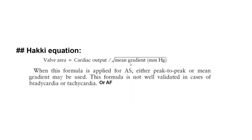When you see the gradient and cardiac output — for example an aortic valve peak-to-peak gradient and cardiac output — you can calculate in your head whether the valve area is less than one or greater than one. Please plant it in your brain: cardiac output divided by the square root of gradient.